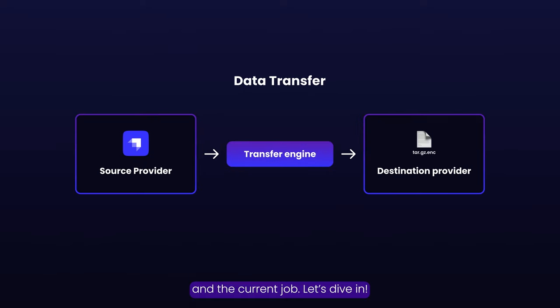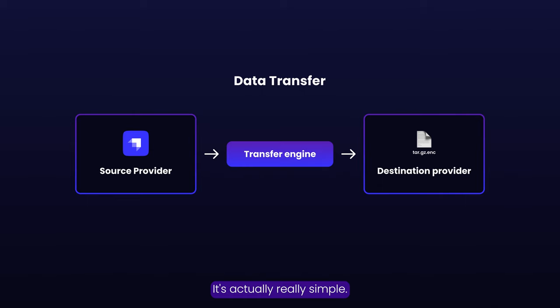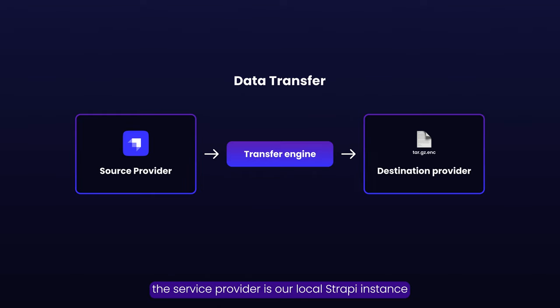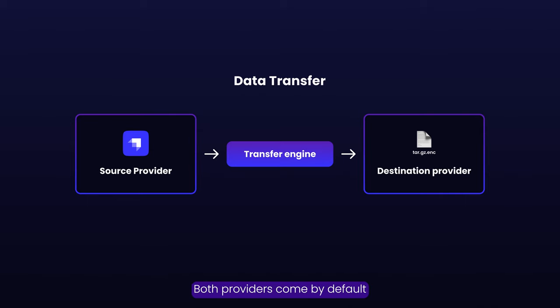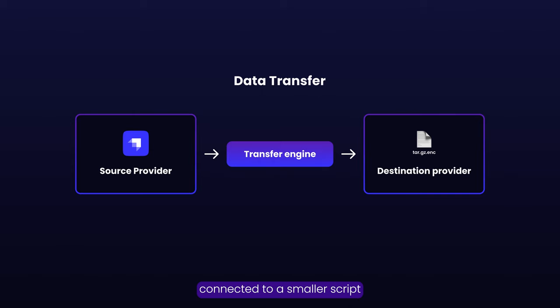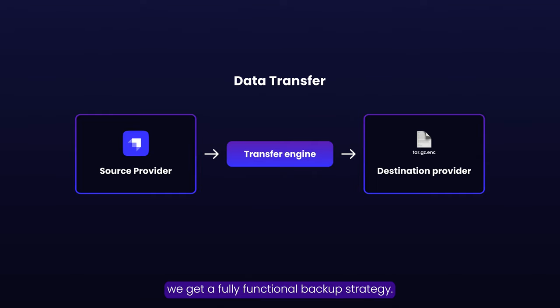To implement our backup strategy for the pastry, we just use the data transfer package and a cron job. Data transfer is composed of a source provider and a destination provider, both connected through a transfer engine. In our case, the source provider is our local Strapi instance and the destination is a file. If we put this together in a function connected to a small script that uploads files to DigitalOcean Spaces, and create a cron job that runs every day at midnight, we get a fully functional backup strategy.